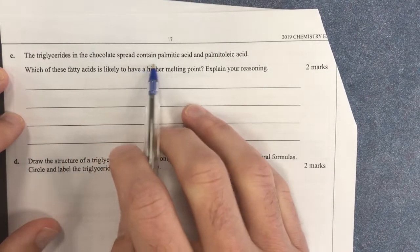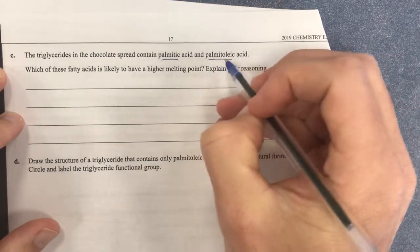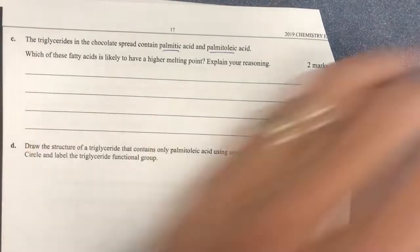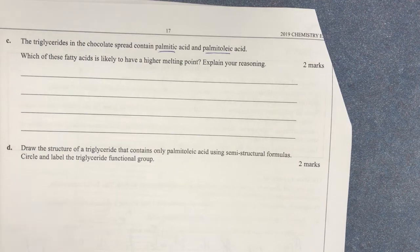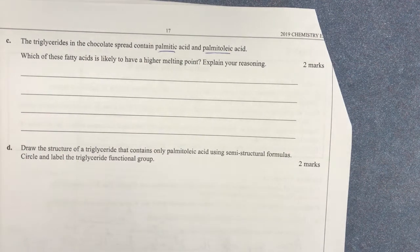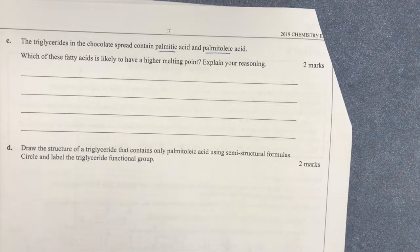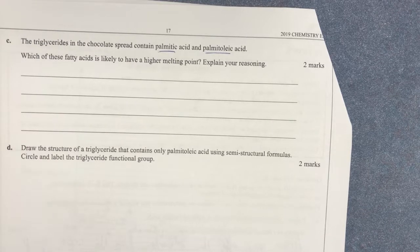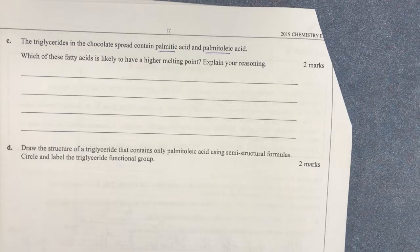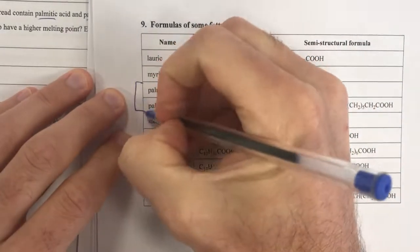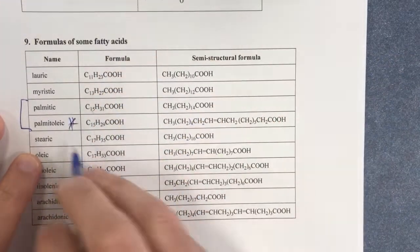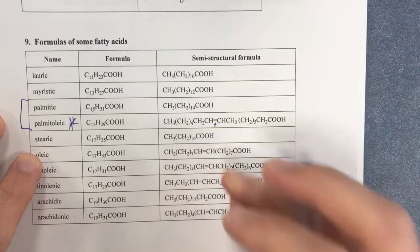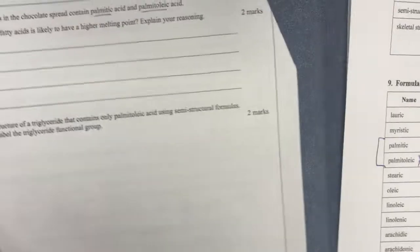Triglycerides in the chocolate spread contain palmitic acid and palmitoleic acid. So I'm going to need to go to my data booklet and go find my fatty acids while I read my next question. Which of these fatty acids is more likely to have a higher melting point? Explain my reasoning. Alright, so melting points in triglycerides and fatty acids are about two things: the size of my fatty acid, but also the number of carbon to carbon double bonds in my fatty acid. So once I find these, I'll then look at these two things. Here he is. So I'm looking at these two here and I can see they're both carbon 15. So therefore they have the same length of carbon chain. But you can see here that this guy here has a carbon to carbon double bond. That means it's going to have a lower melting point than palmitic acid.